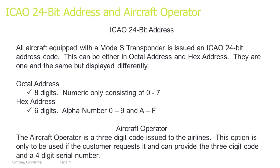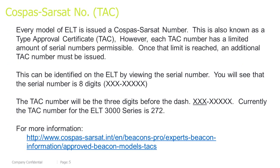This is not to be confused with the ELT serial number. Every model of ELT is issued a Cospas-Sarsat number, also known as a Type Approval Certificate, or TAC. However, each TAC has a limited amount of serial numbers permissible. Once that limit is reached, an additional TAC number must be issued. This can be identified on the ELT by viewing the serial number — you will see that the serial number is 8 digits with a dash in the middle. The TAC number will be the 3 digits before the dash. Currently, the TAC number for the ELT 3000 Series is 272. For more information, please visit the Cospas-Sarsat website.